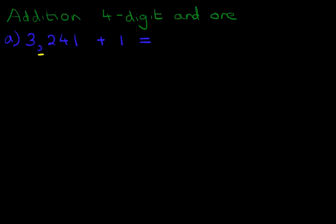Now, the first stage in learning how to add large numbers is to rewrite the question in the vertical format. So let's do that. 3,241 plus one.